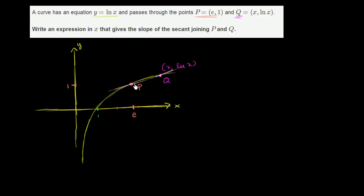Well, to find the slope of the secant line, I just need to find the change in y and the change in x between these two points. So let's be clear here. This is when x is equal to, well, it's just an arbitrary x. And this right over here is the point ln(x). So what is our change in x? Our change in x is just going to be x minus e. And what is our change in y? Our change in y is going to be ln(x) minus 1. That's this distance right over here.